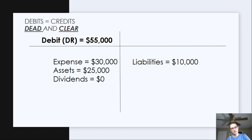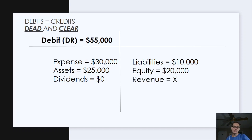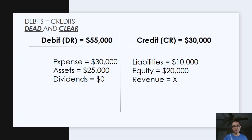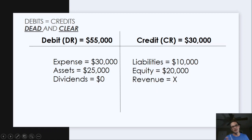Now go through our CLEAR mnemonic. We know our liabilities are $10,000, our equity is $20,000, and we don't know our revenue — we're solving for it. So we plug that in as our variable. We know total credits equal $30,000 known so far, and total debits are $55,000. So revenue — assuming no other expenses — is equal to our net income of $25,000. That's it.